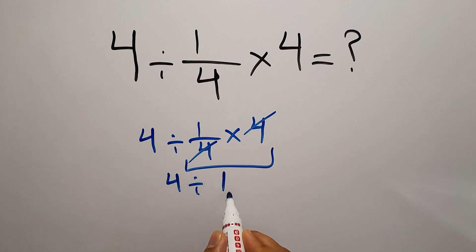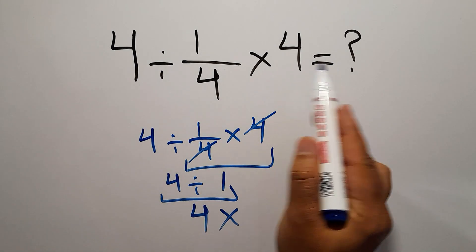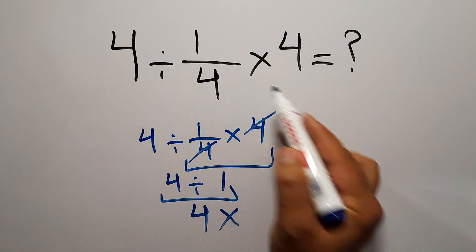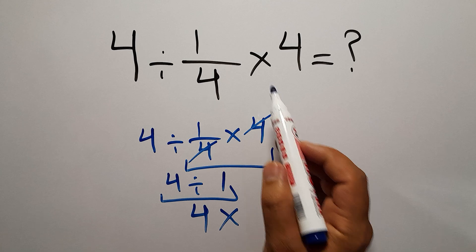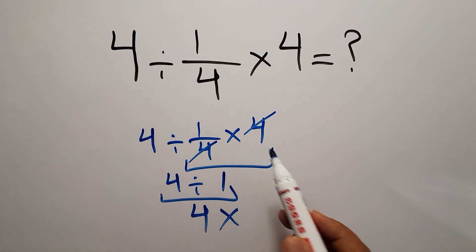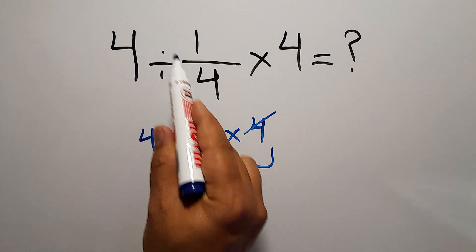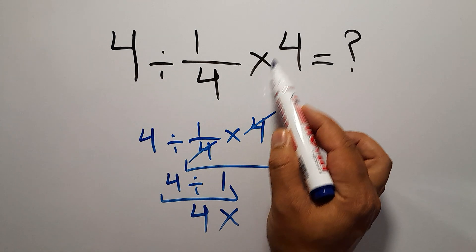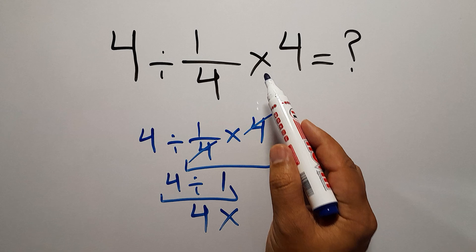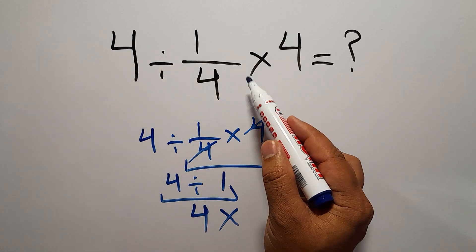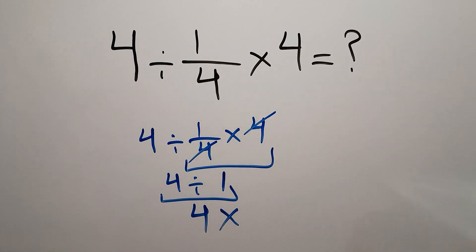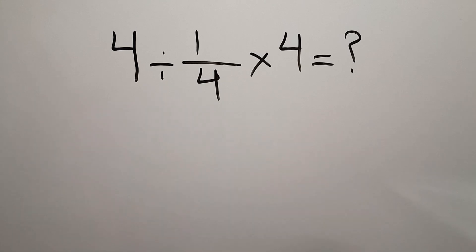...which equals 4. But this answer is not correct because in this expression we have one division and one multiplication. As we know, multiplication and division have equal priority and we have to work from left to right. So first we have to do this division, not this multiplication. After division, we have to do this multiplication.